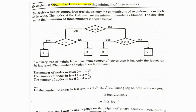For example, we take the question: obtain the decision tree to find the minimum of three numbers. To find the minimum of three numbers, firstly we compare A and B. If A is greater than B, it comes on the left side; if not, it goes on the right side. If A is greater than B, A is larger. Now we check A with C: if A is greater than C, then A is greater than both B and C, so A is the largest. If A is not greater than C, then C is the largest. On the other side, if B is greater than C, then B is the largest; else C is the largest.